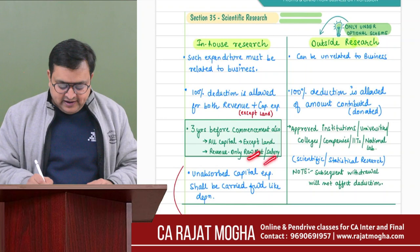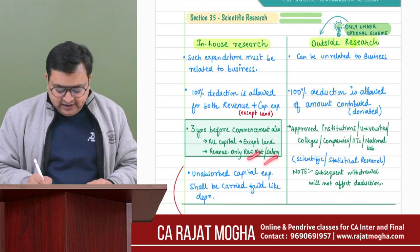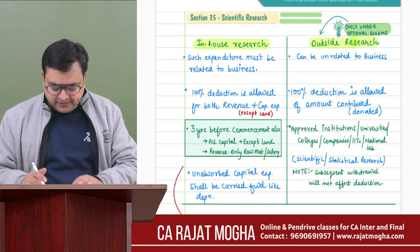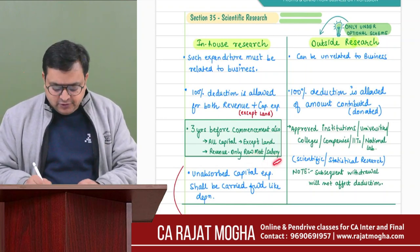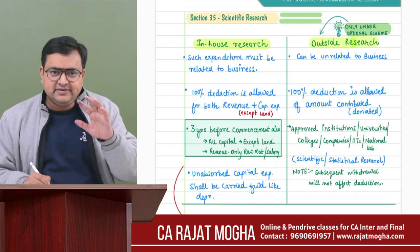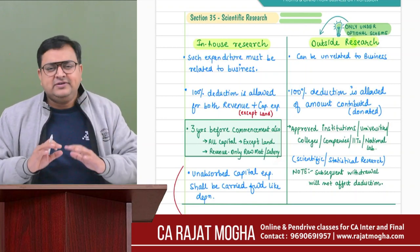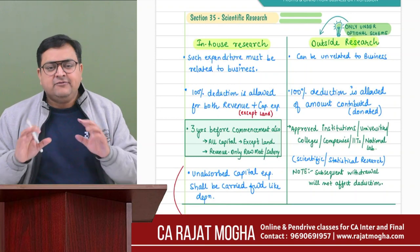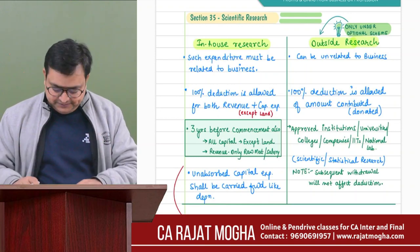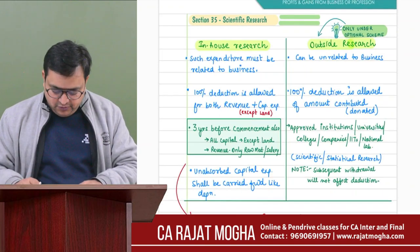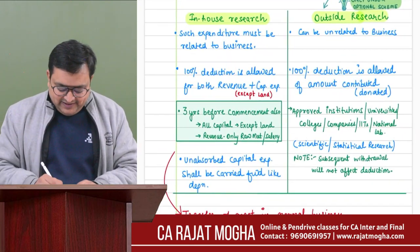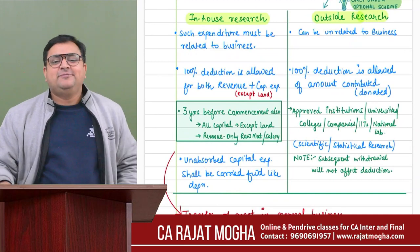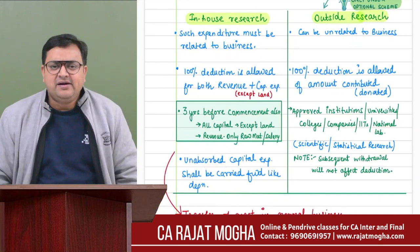Salary is allowed but without perquisites. After commencement, there are no restrictions - all revenue expenses related to the business are allowed. Only for pre-commencement revenue expenses are we limited to salary and raw materials.